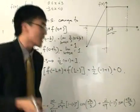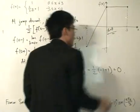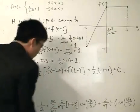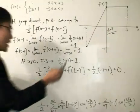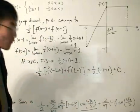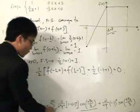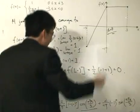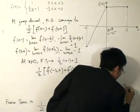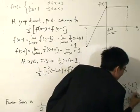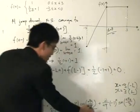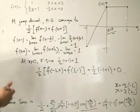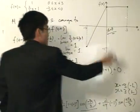You might wonder why the Fourier series converges to the same value at both endpoints. If we substitute x equals negative 3 or x equals 3 into the Fourier series, the sine nπx term equals zero at both endpoints. So we're only left with the cosine term, which is why both endpoints converge to the same spot — in this case, 0, as shown on the graph.